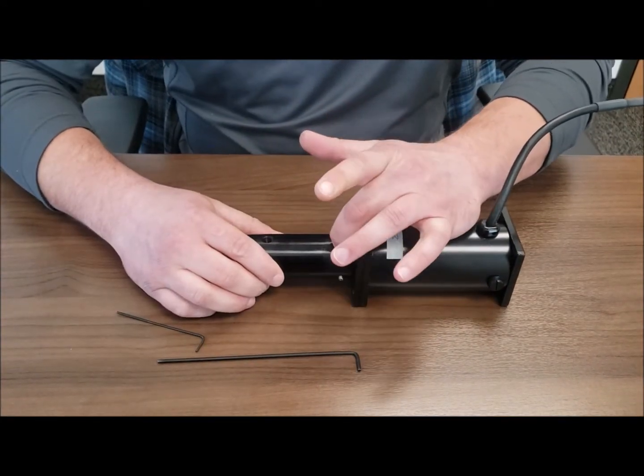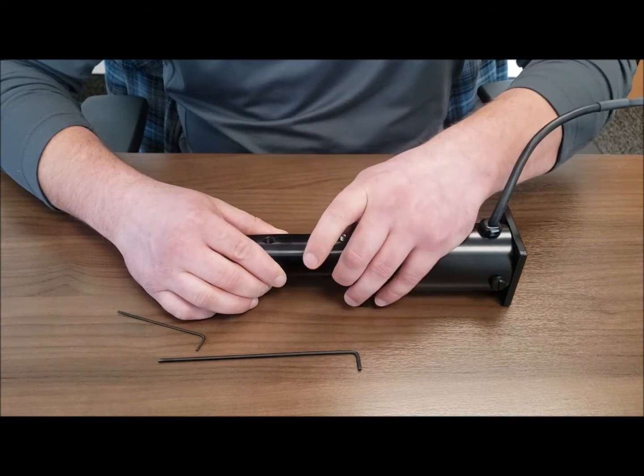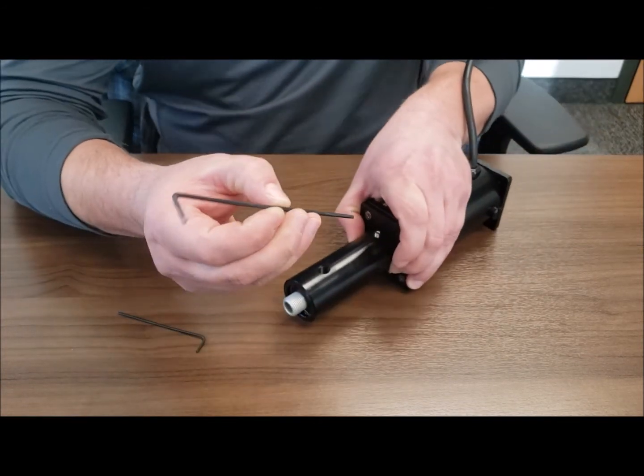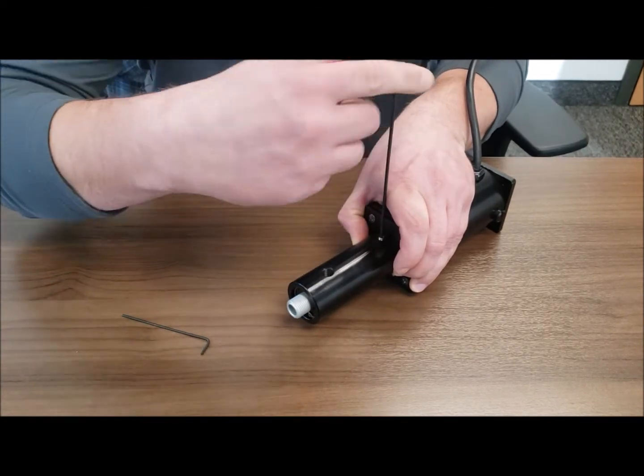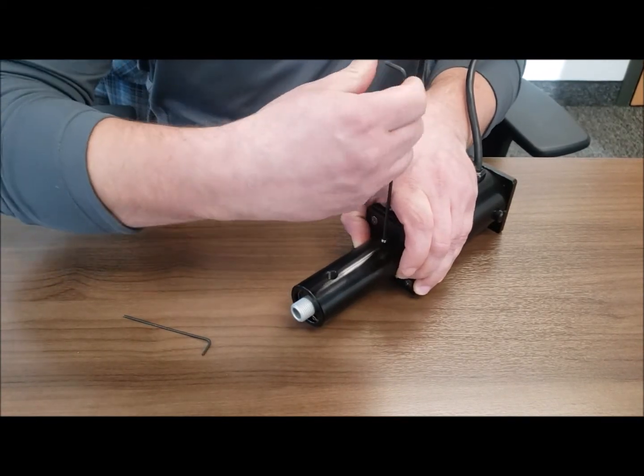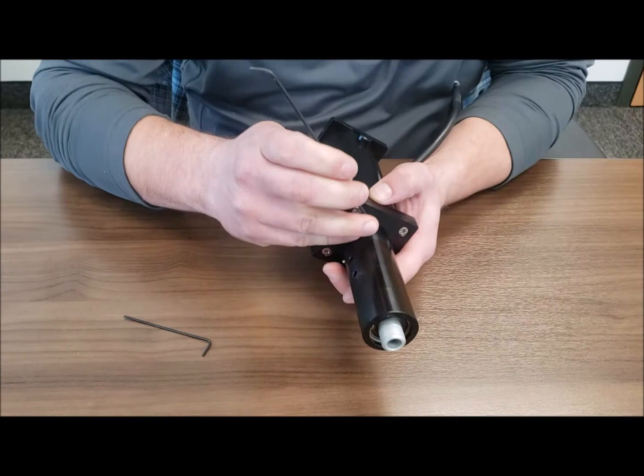Keeping the chuck shaft and the motor flush together, take your 3/32 allen wrench and tighten down the mounting screws in the vacuum chuck shaft.